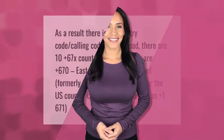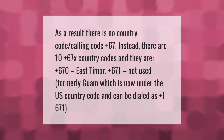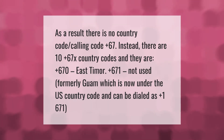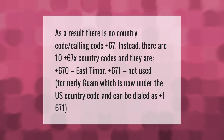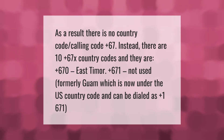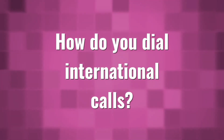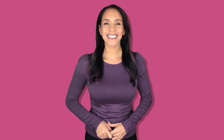As a result, there is no country code calling code plus 67. Instead, there are country codes that begin with 67: plus 670 is East Timor, and plus 671 was formerly used for Guam, which is now under the US country code and can be dialed as plus 1-671.